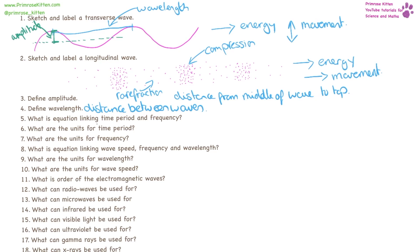The equation linking time period and frequency is that time period, this time with a capital T, equals one over frequency. The units of time period are seconds. The units of frequency are hertz. That is a capital H and a lowercase z. It has to be a capital H and a lowercase z. If it isn't, I'm afraid you're not getting the marks.